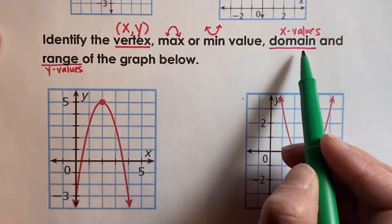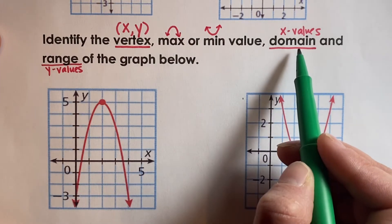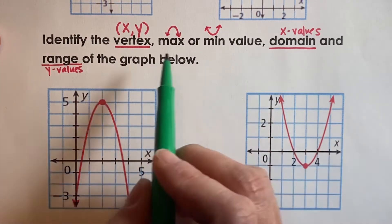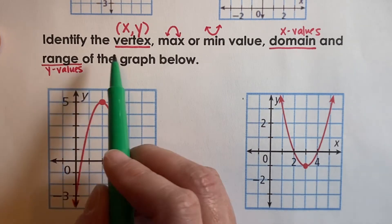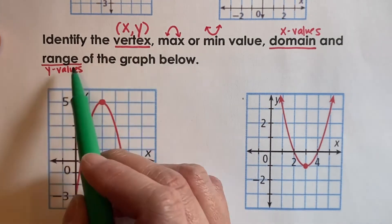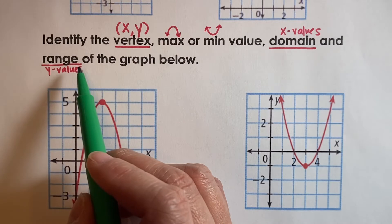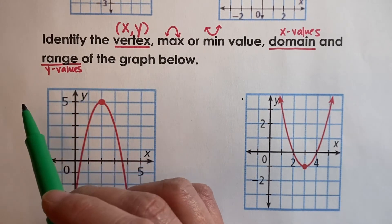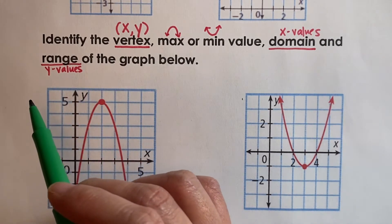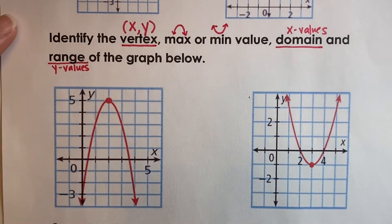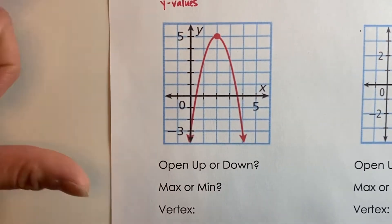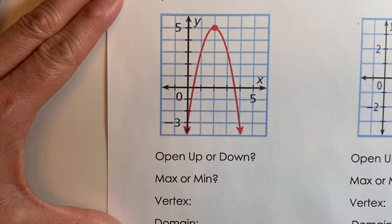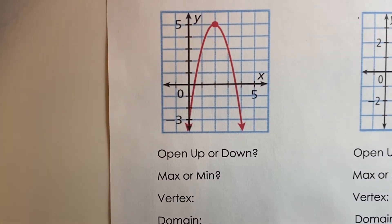The domain will depend on your graph — the x values — and if there are arrows, it's all real numbers. The range will come from that y value from your vertex. You identify whether your graph is facing up or down, and determine whether the y values are greater than or less than that vertex y value. Let's look at this first example and walk through the key attributes.